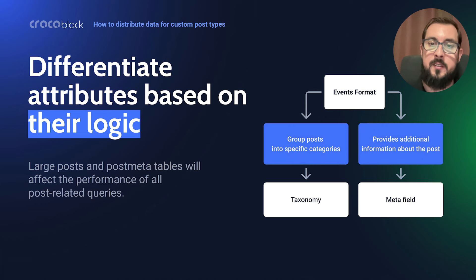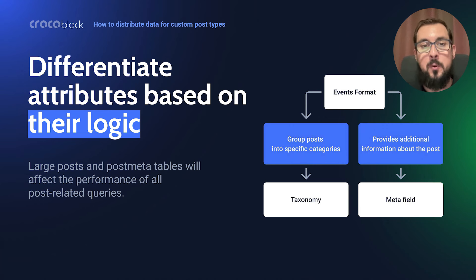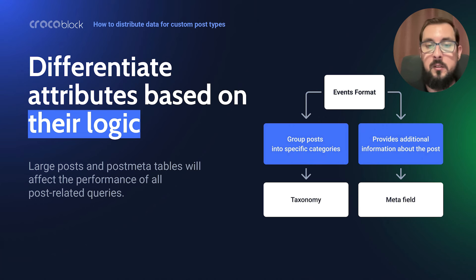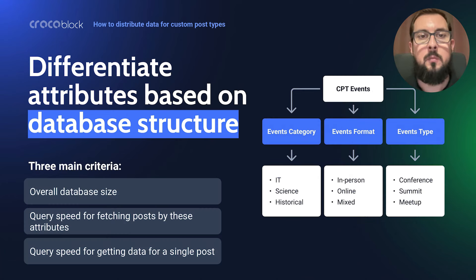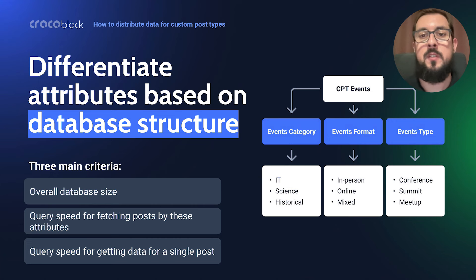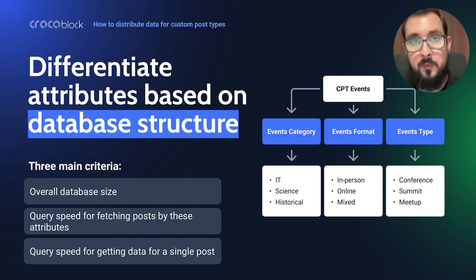In theory, you should first differentiate these properties based on their logic. If the property can group posts into specific categories, it should be a taxonomy. If the property provides additional information about the posts, it should be a meta field. For example, event format is likely to be a taxonomy, while properties like price, short description or maximum number of participants should be a meta field. There are also special cases — for example, the location could be either taxonomy or meta field depending on the specific requirements of the project. But now let's consider this question from the perspective of database structure optimization and query performance, using the same event agency example with three properties: event category, event format and event type.